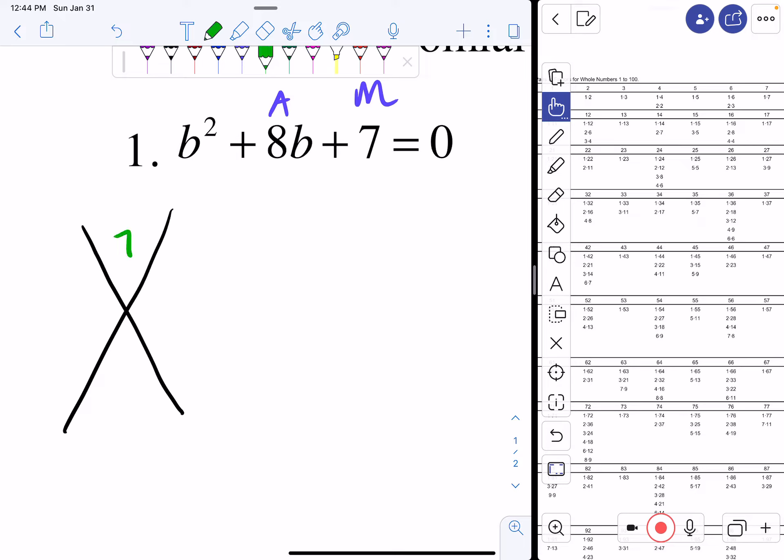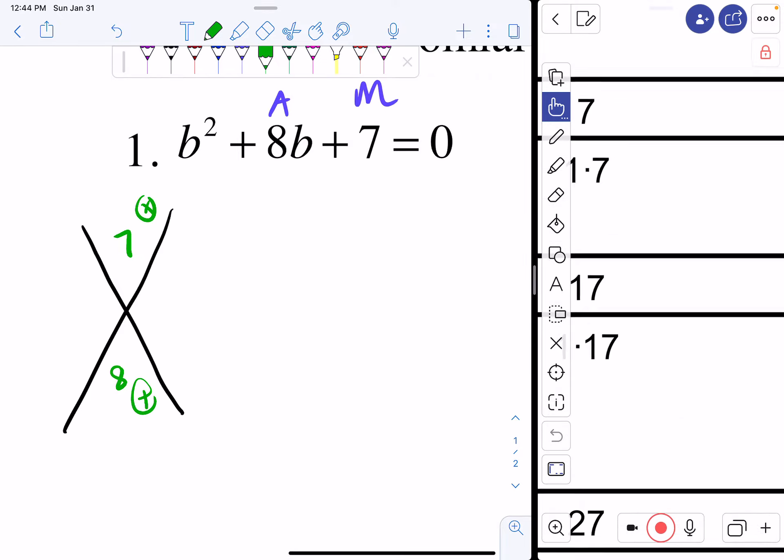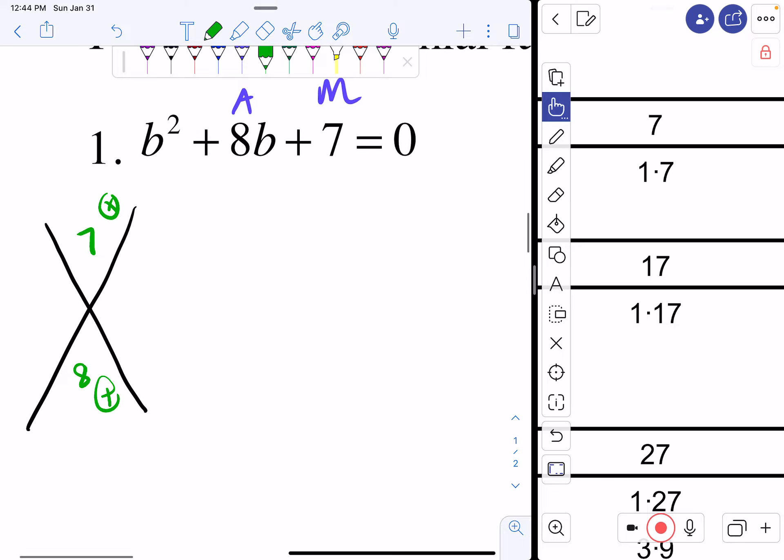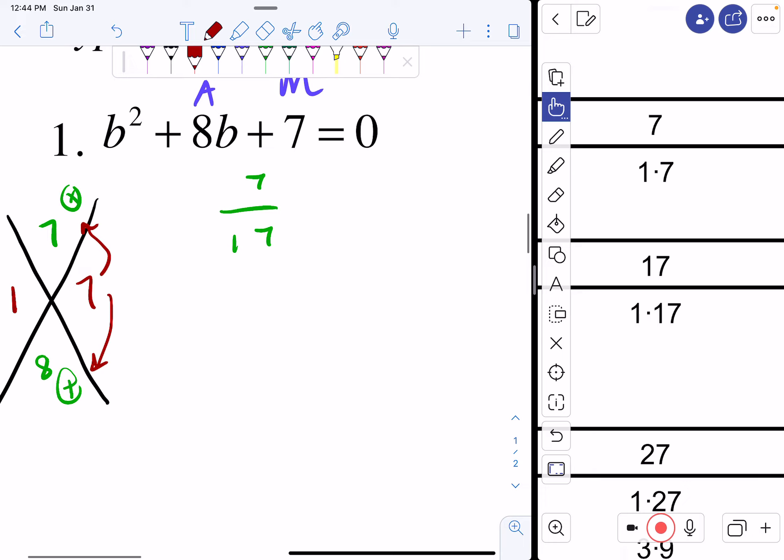So I draw my diamond. Put my 7 up top, my 8 downstairs. And what I want to do is I want to multiply to a 7. The only numbers that multiply to 7 are 1 and 7. So that's all that can really go in my diamond. I check: 1 times 7 is 7. 1 plus 7 is 8. So I can break this apart to be b plus 1 and b plus 7.